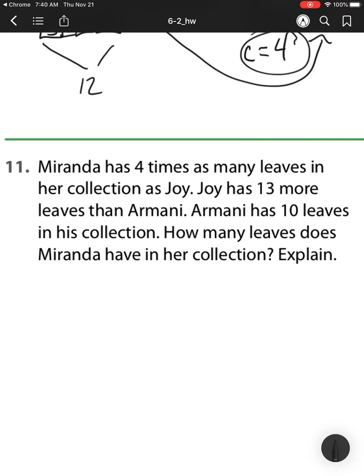Number 11. Miranda has 4 times as many leaves in her collection as Joy. Joy has 13 more leaves than Armani. Armani has 10 leaves in his collection. How many leaves does Miranda have in her collection? Well, here I have 3 things going on. I have Armani. I have Joy. And I have Miranda.